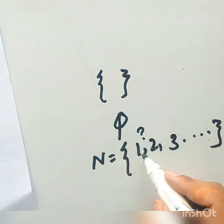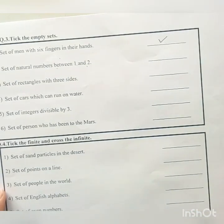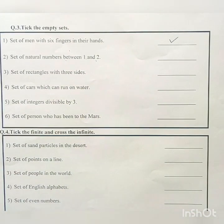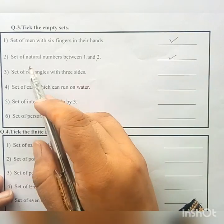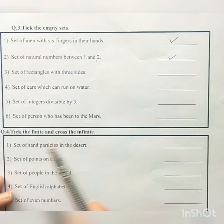So between 1 and 2, the empty set is formed. So option B is also right that the set of natural numbers between 1 and 2 is empty set.